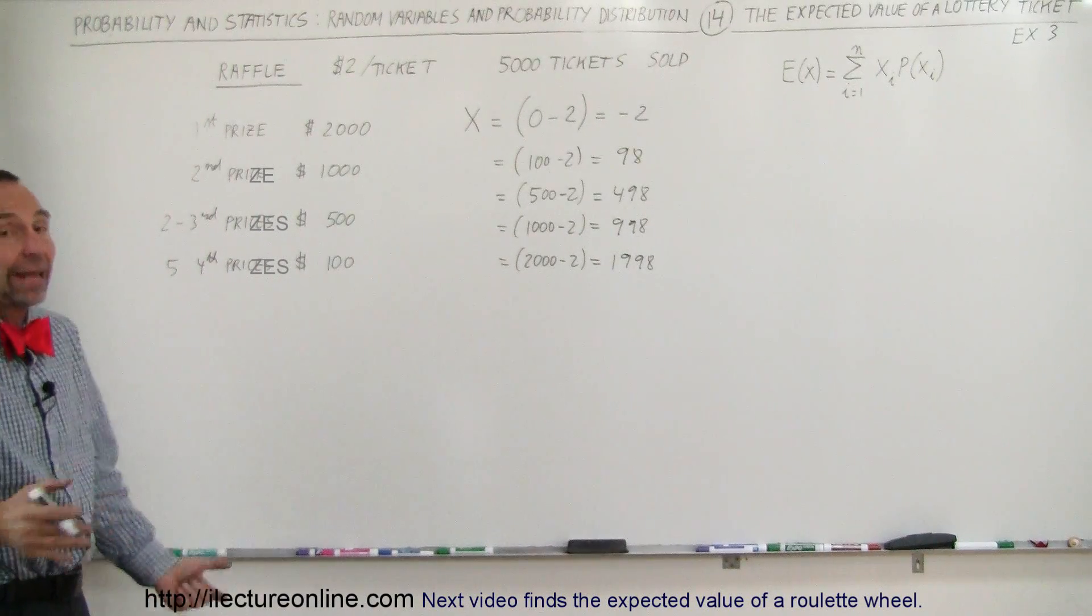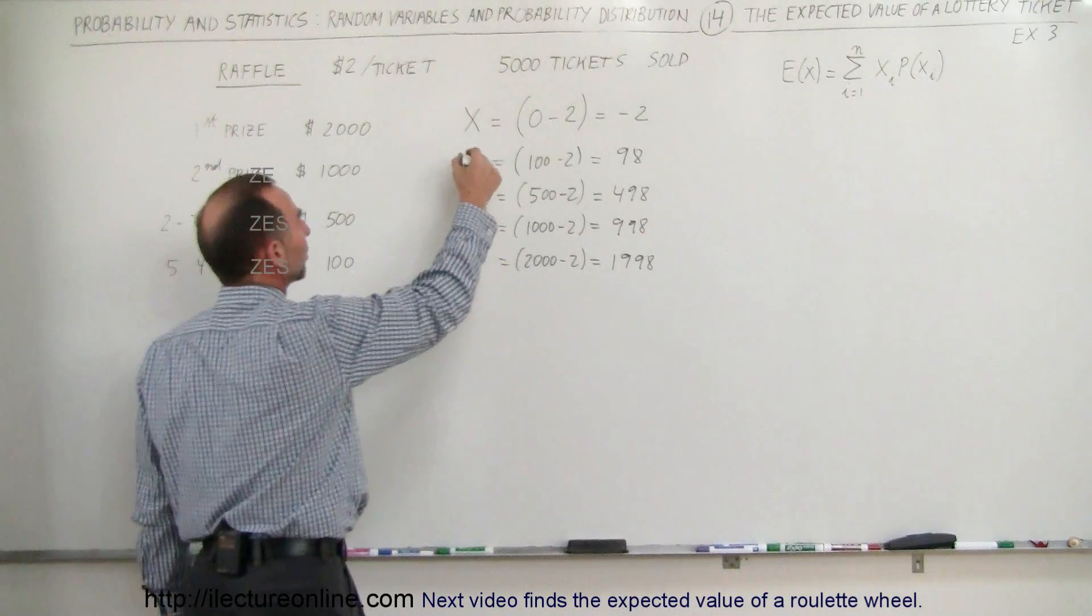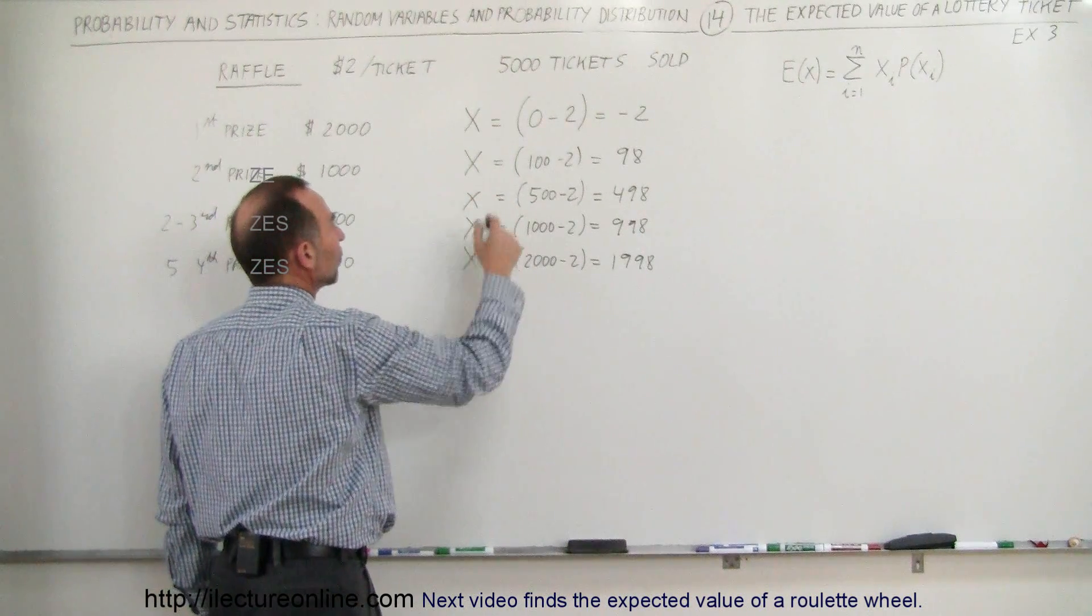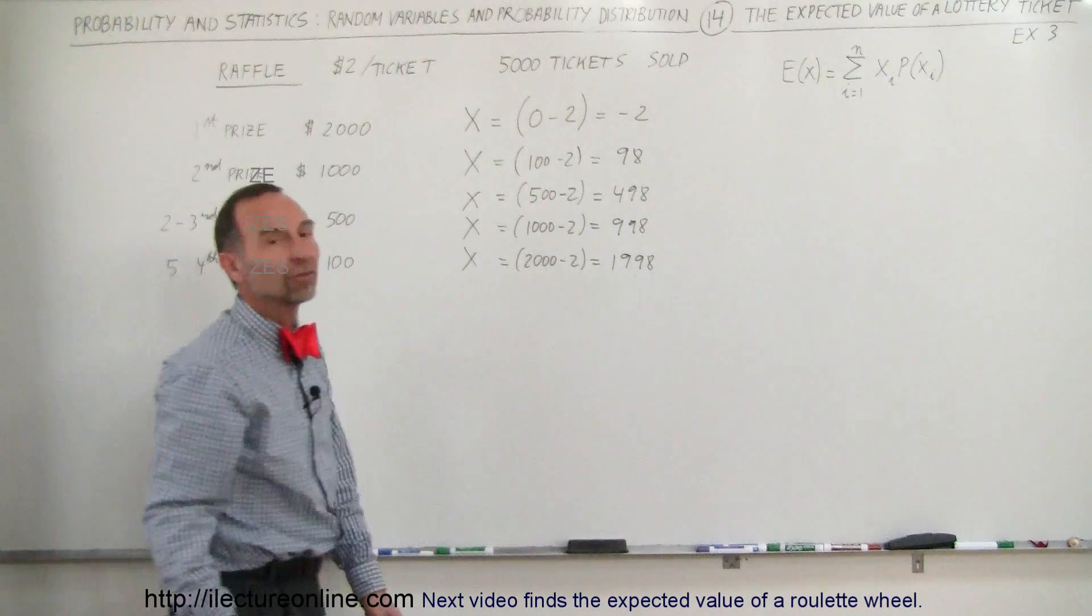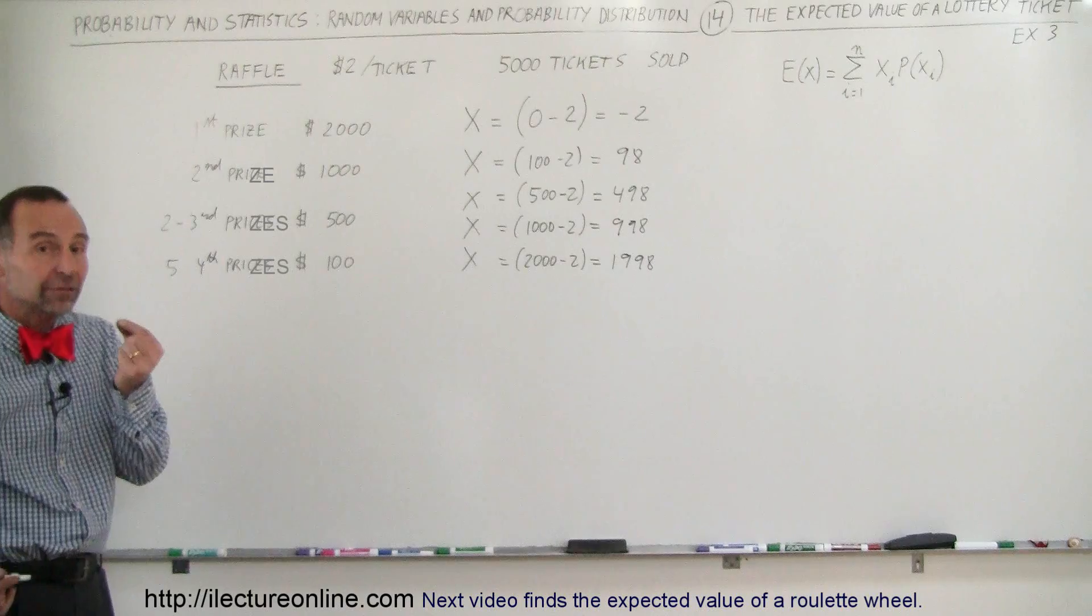That would be your random variable. X is your random variable. And I'll just go ahead and put X's everywhere so nobody gets confused. So there's one, two, three, four, five possible values for X. X representing the value of the ticket.